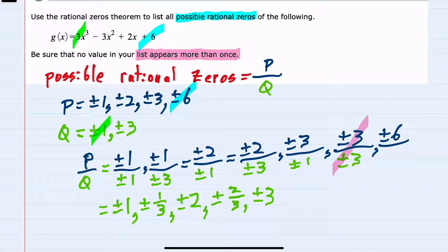Six in the numerator over the first q, plus or minus one, simplifies to plus or minus 6. And then my last possibility is where we still have the six in the numerator and now a three in the denominator.